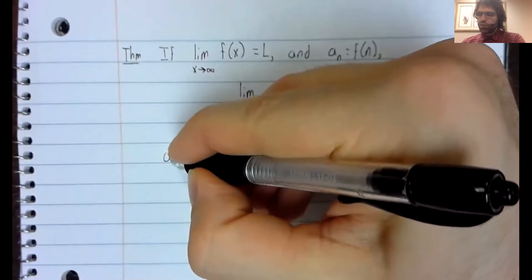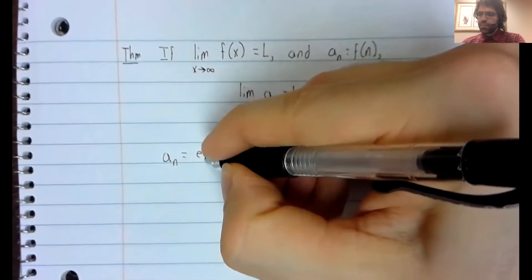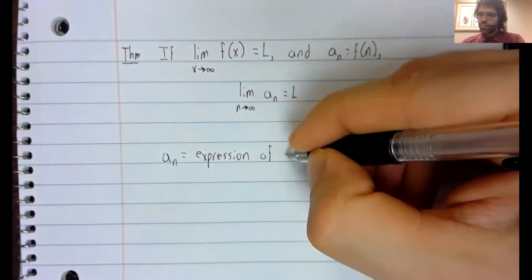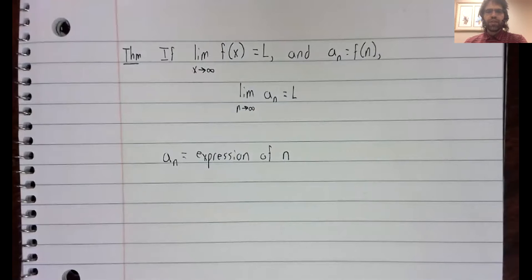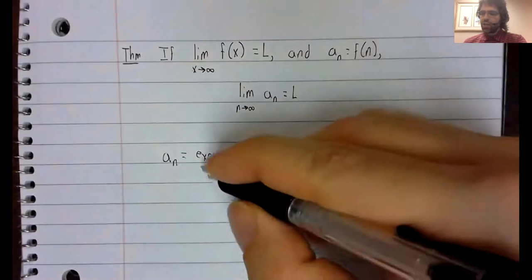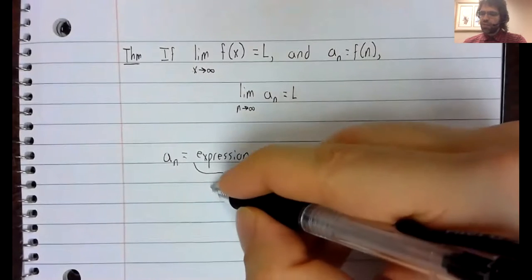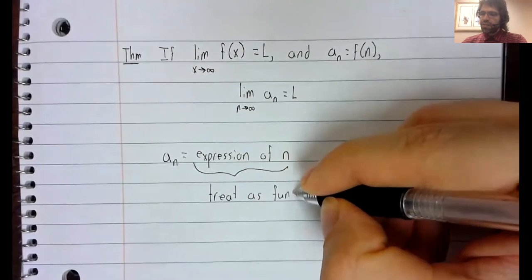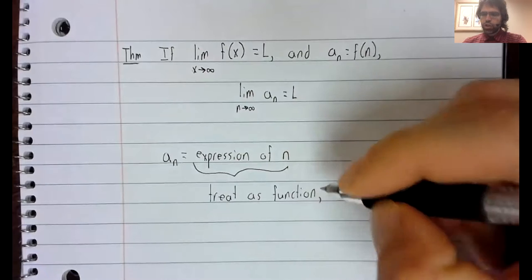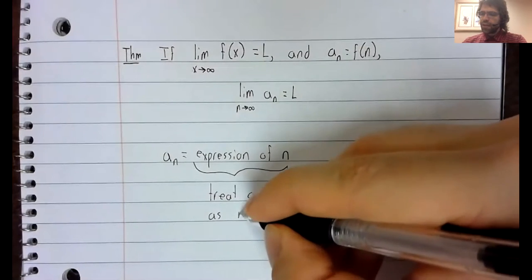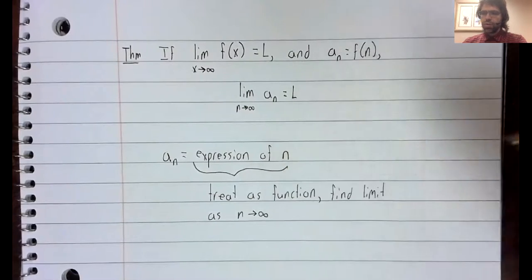Maybe that's a little cryptic. Hopefully we can make it less so. Ordinarily, when we have a sequence, it's defined in the following way: a sub n equals some expression involving n. And what this theorem says is that you should treat this as if it were a function, and then find the limit as n goes to infinity.